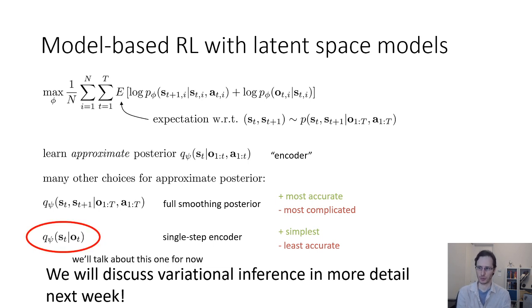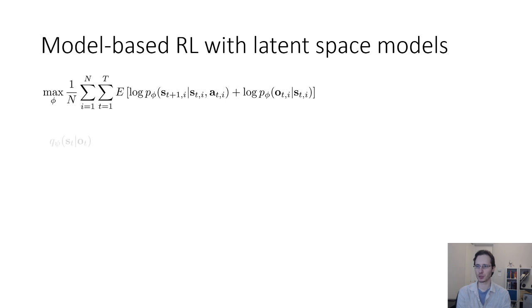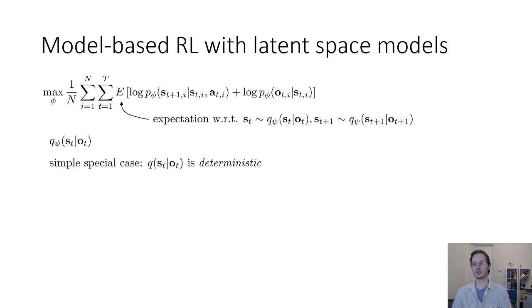So, we're going to talk about the single step encoder, and we're going to talk about a very simple special case of the single step encoder. So, if we were to really do this right, then for every time step, we would sample st from q of st given O2 and st plus 1 from q of st plus 1 given O2 plus 1, and then using those samples maximize log p of st plus 1 given st A2 and log p of O2 given st. But a very simple special case of this, if you believe that your problem is almost fully observed, is to actually use a deterministic encoder.